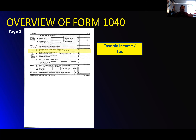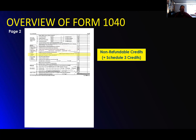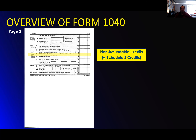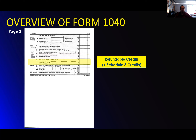Taxable income is basically income minus your deductions. Then it calculates any non-refundable credits — your schedule three credits — anything that will count against that taxable income. The non-refundable ones include things like school deductions and the first part of the child tax credit. Then you put in your refundable credits — these are the fun ones, because these actually come back to you. Those are off schedule five.